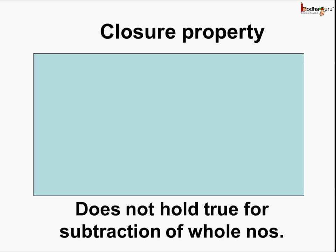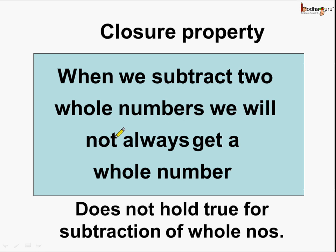So what can we say? The closure property does not hold true for the subtraction of whole numbers. The closure property means when we subtract two whole numbers, we will not always get a whole number — it can either be a whole number or at times it will not be a whole number.